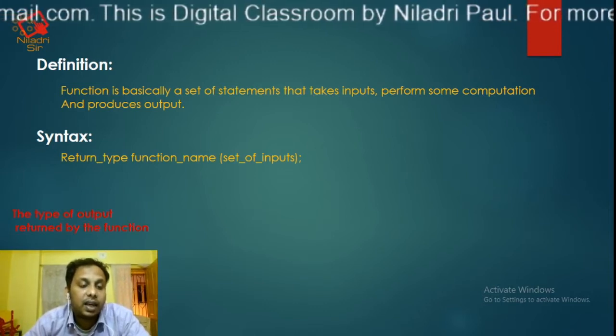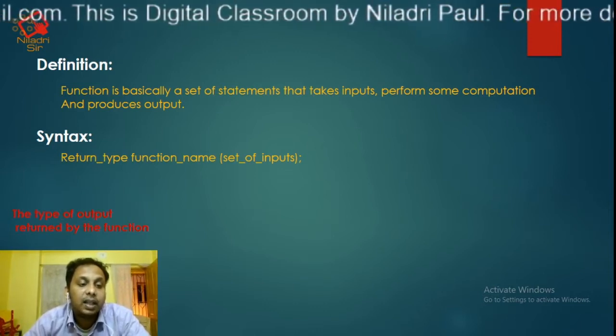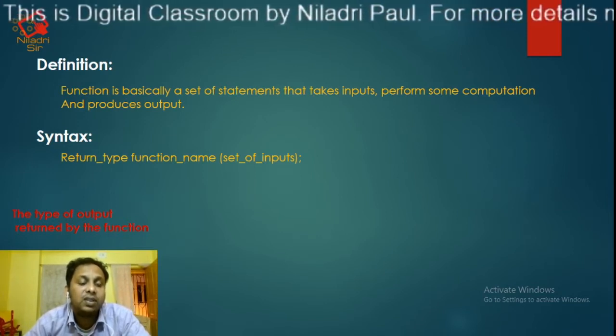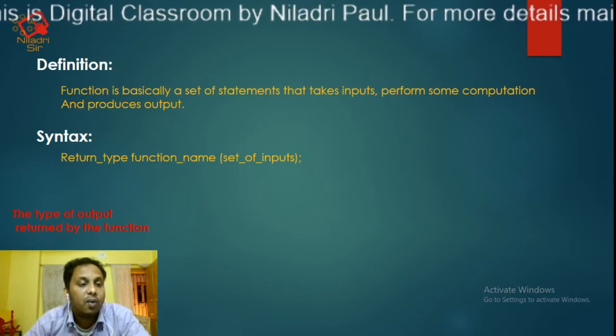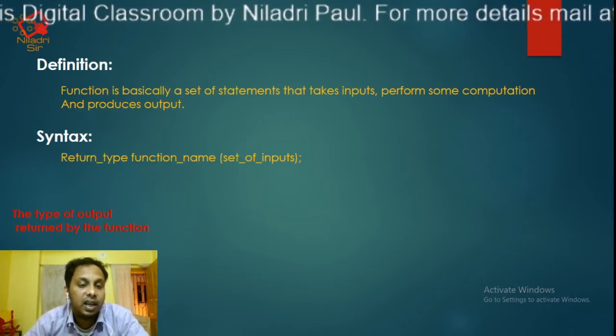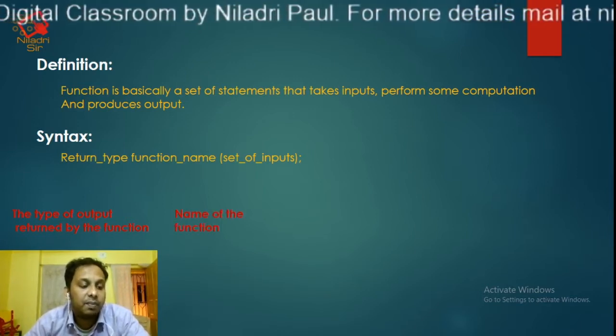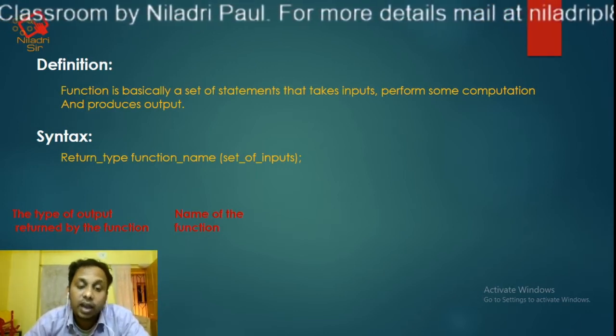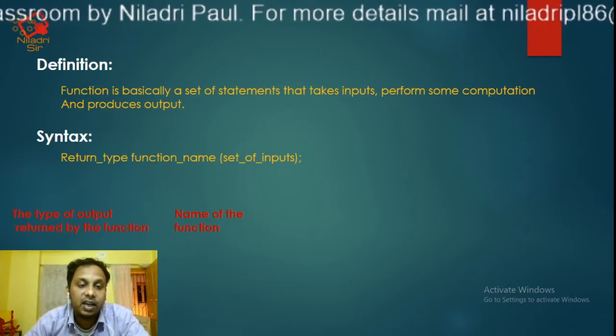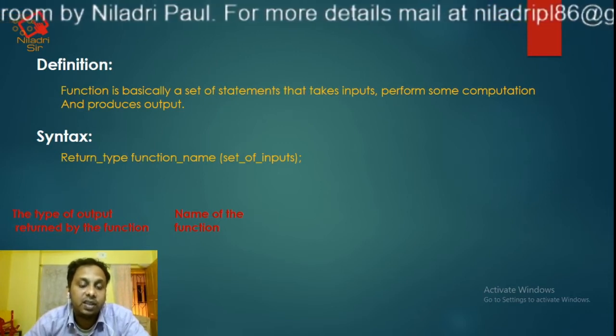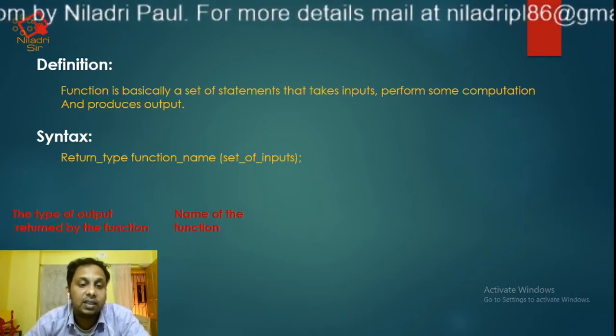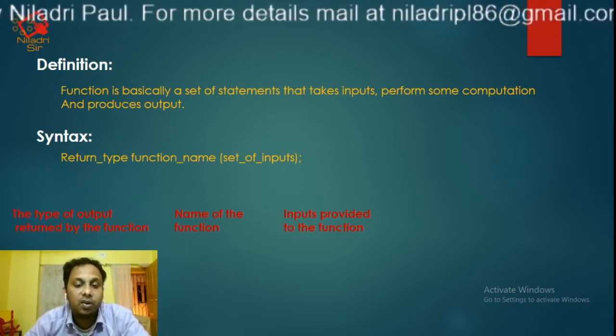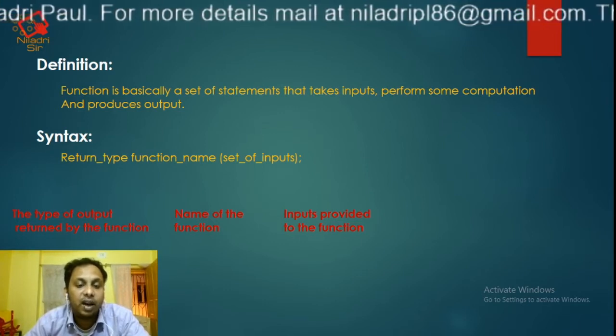So return type - why we use this return type? The type of output written by the function. That means what type of values, that may be int, float or char. What type of values the function return. The function name can be built by any characters. You cannot use the function name with the special symbols or any other digits and the set of inputs as I said earlier that this is optional.